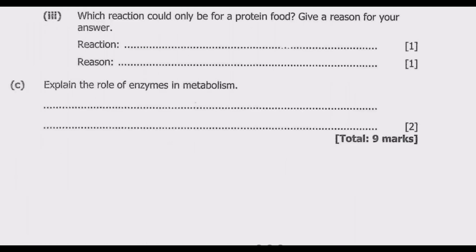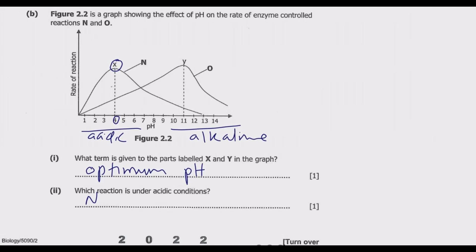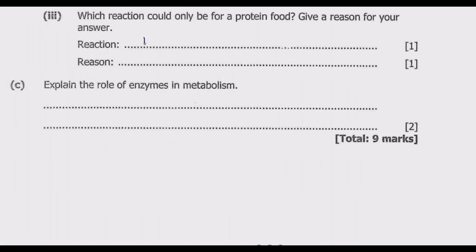Question 3 of part B: which reaction could only be for a protein food? Give a reason for your answer. Protein foods are considered to be one of the main sources of acid. Looking at the reaction curves, reaction N is in the acidic condition, so N should be protein. The reason is that protein foods are digested in an acidic pH range.